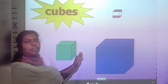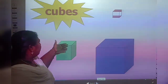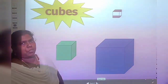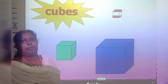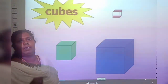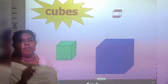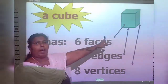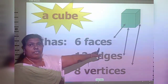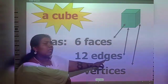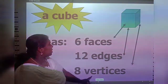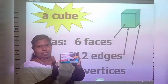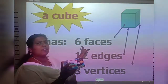The first one is a cube. The faces of a cube are square-shaped — all sides are equal with four sides and four corners. A cube has 6 faces, 12 edges, and 8 vertices. This chalk piece box is the example — you can see 6 faces: 1, 2, 3, 4, 5, 6.